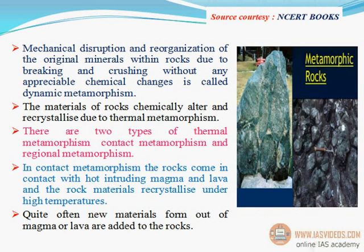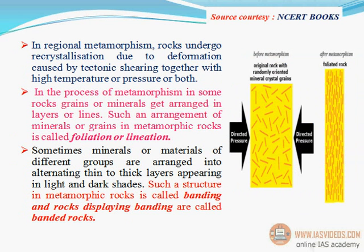Mechanical disruption and reorganization of the original minerals within rocks due to breaking and crushing without any appreciable chemical changes is called dynamic metamorphism. When rock materials chemically alter and recrystallize due to heat, it is called thermal metamorphism. There are two types of thermal metamorphism: contact metamorphism and regional metamorphism. In contact metamorphism, the rocks come in contact with hot intruding magma and lava, and the rock materials recrystallize under high temperatures; quite often new materials from magma or lava are added to the rocks.